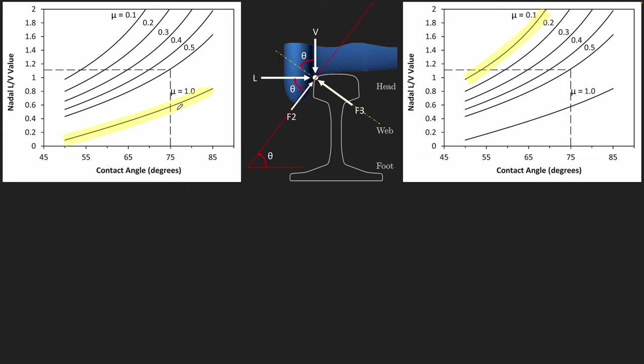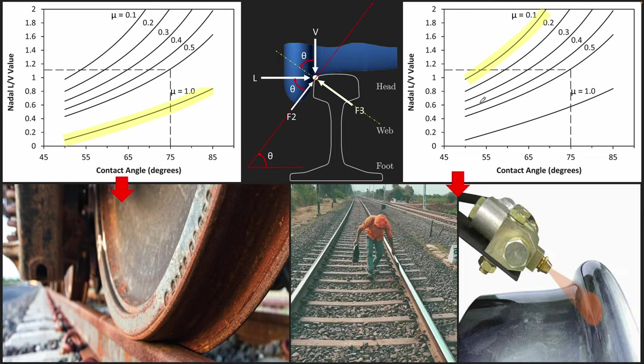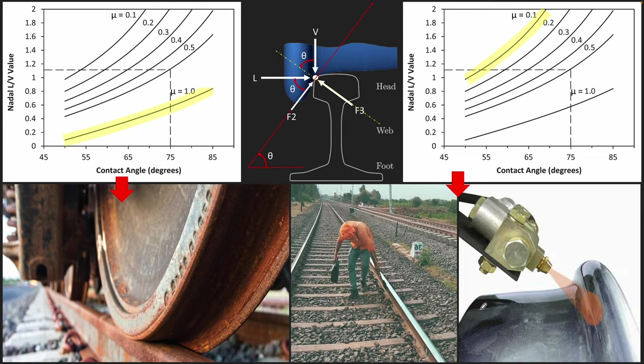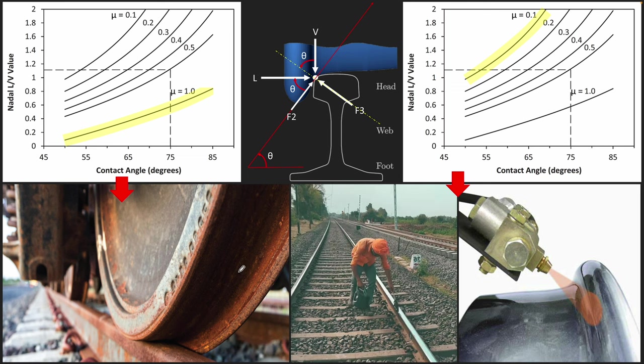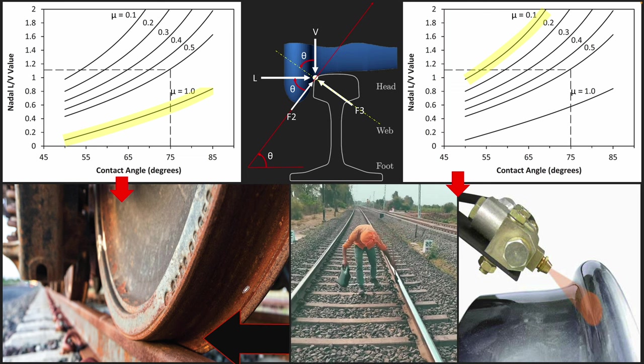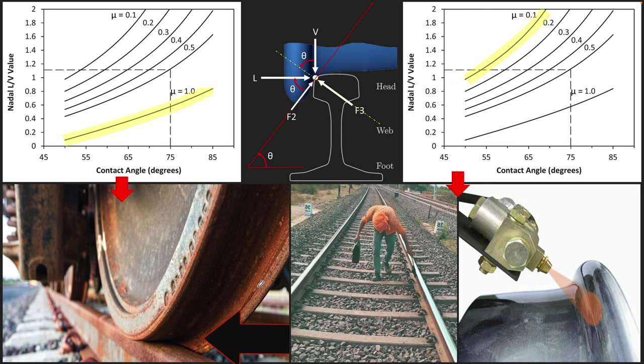Let's try to compare a couple of scenarios to understand how these L/V ratios work. One scenario is high coefficient of friction, meaning the surfaces are rough. The other scenario is low coefficient of friction, meaning the surfaces are smooth. For high coefficient of friction, it's rough rails and rough wheels, old and rusty and dry.